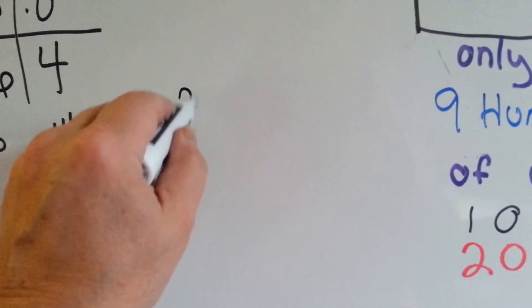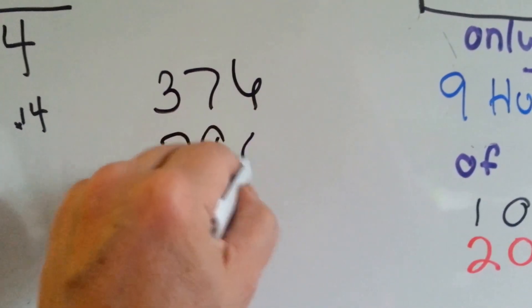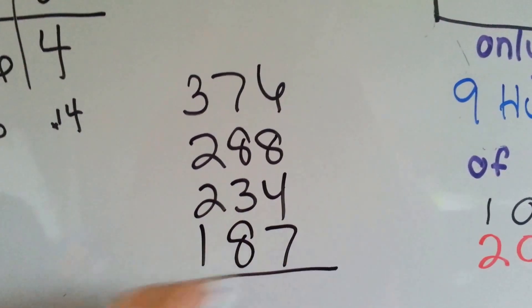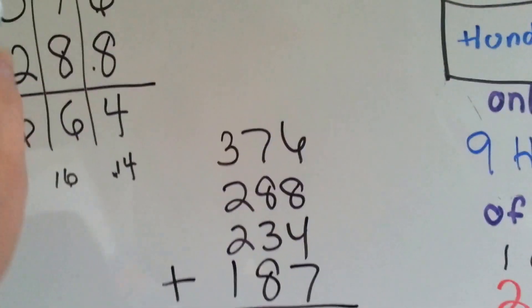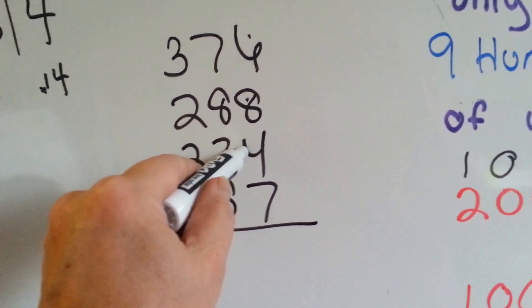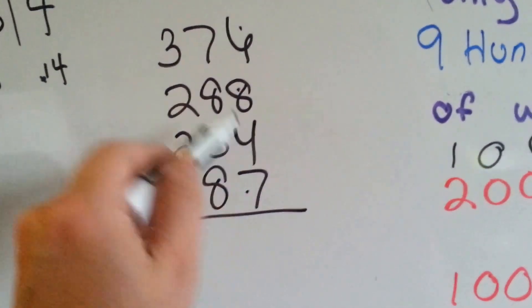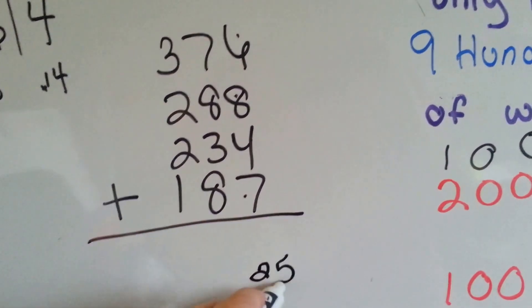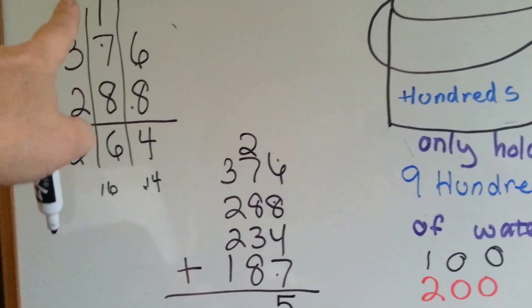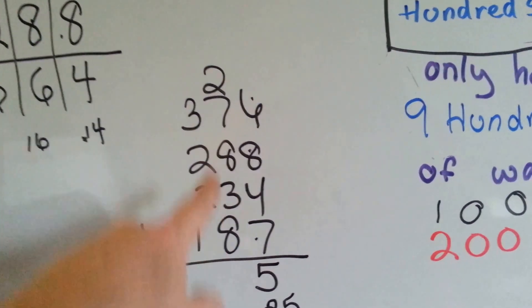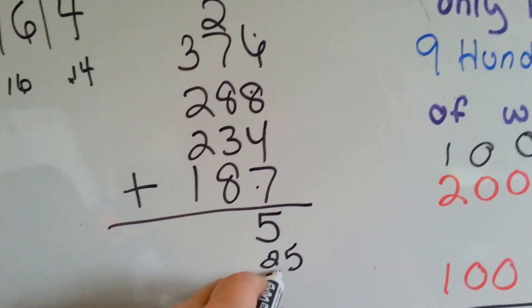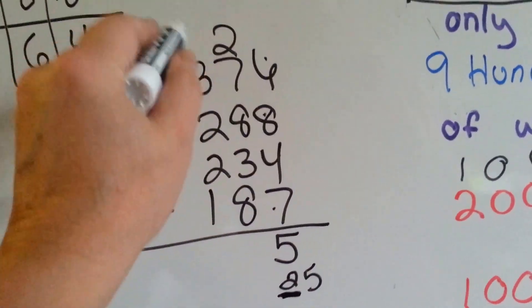Sometimes, when you're adding lots of numbers, you would end up carrying over more than a 1. 8 plus 6 is 14. Plus 4 more is 18. Plus 7 more is 25. So, we're actually going to put the 5 here and carry over the 2. So, it's not only just ones that get carried over. If you're adding a lot of numbers, it could be a 2, a 3, a 4. It could be any number. It's whatever is in the left-handed side place value that needs to be carried over.